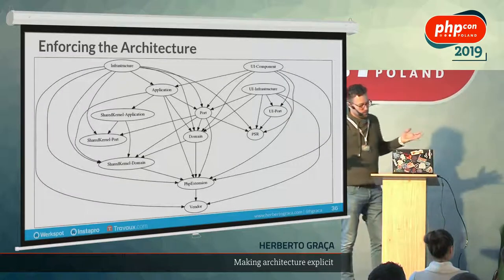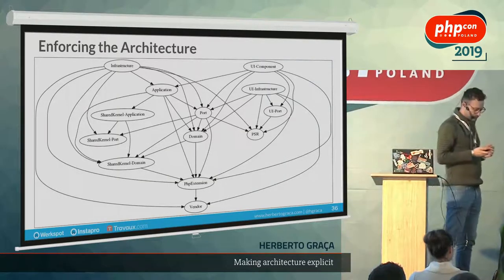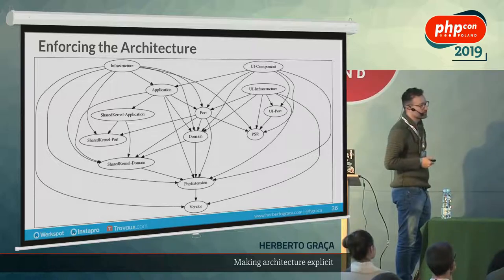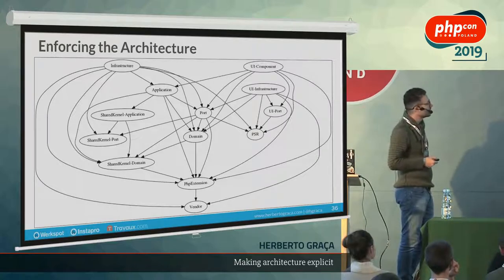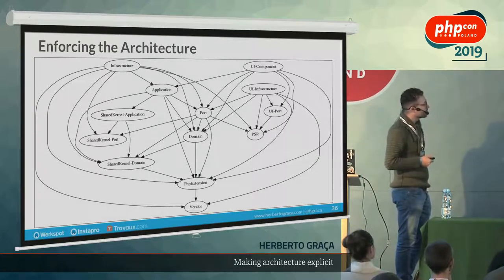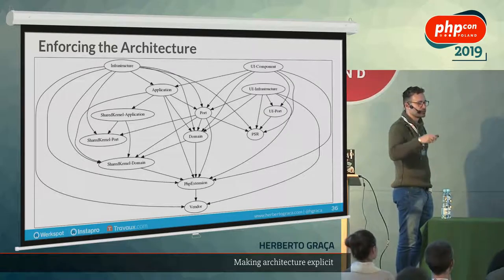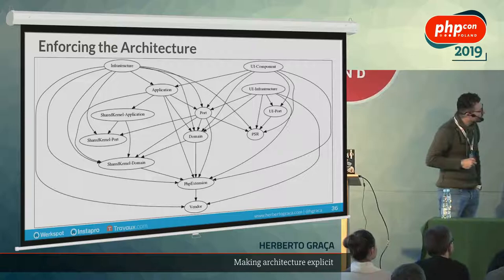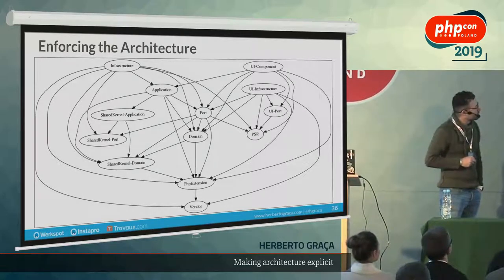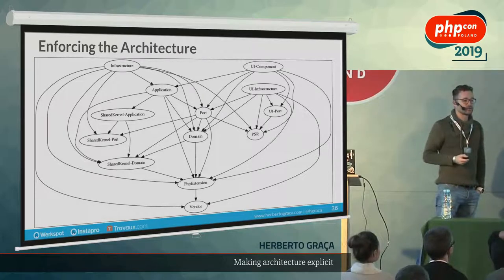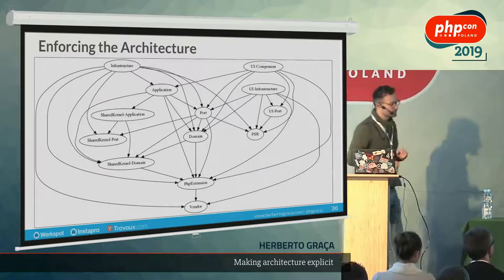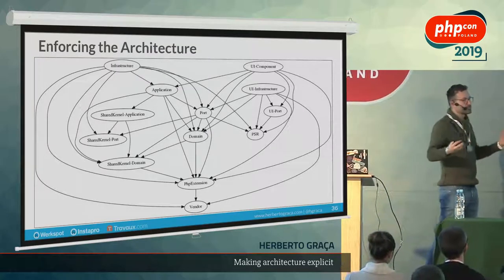If the command-line output isn't enough, Deptrac can also generate visual diagrams. You can see, for example, that controllers are allowed to depend on services, queries, and repositories, but if a repository depends on a controller, something is clearly wrong. For a bigger application the diagram shows the domain depending on nothing external, code depending on PSR interfaces, and infrastructure depending on many things — but nothing depending on infrastructure, because ports and adapters isolate that infrastructure code.